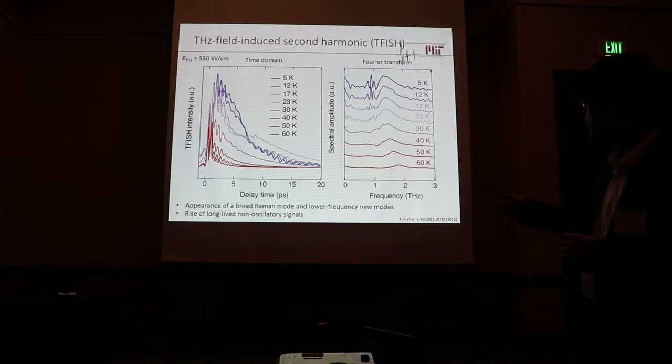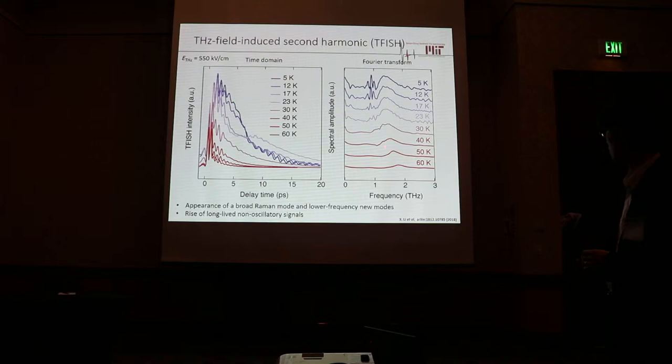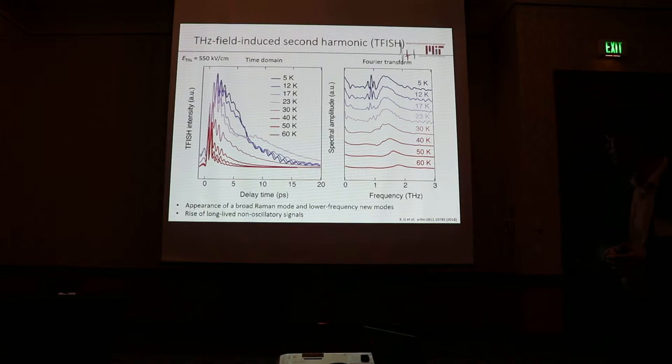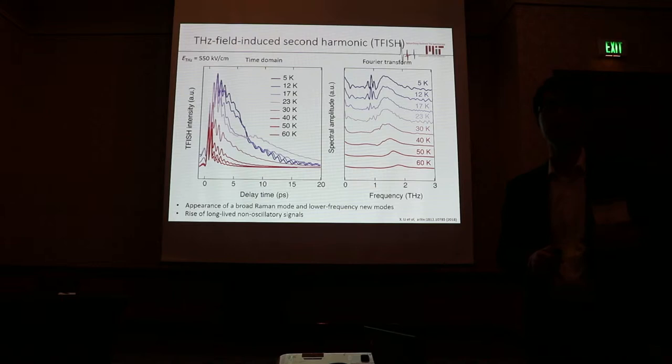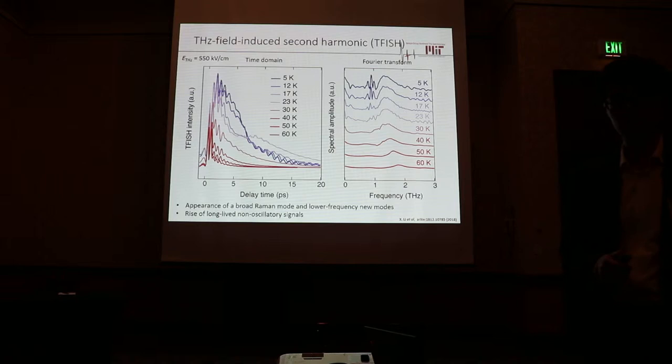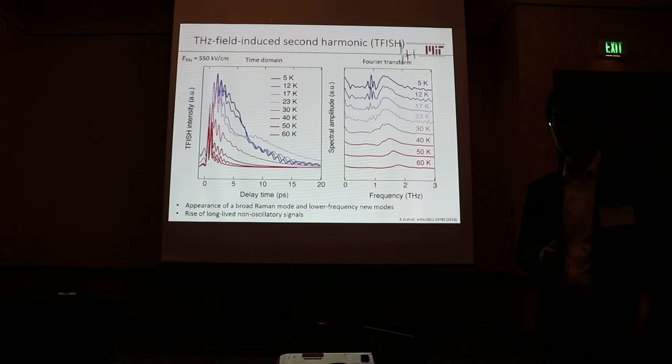As we lower the temperature, we first see the soft mode moving to lower frequency. At even lower temperatures, we start to see three new spectral modes that appear at lower frequencies. Since TIFISH is a symmetry-selective measurement sensitive only to IR-active responses, the appearance of these modes provides the first indication that inversion symmetry breaking has occurred, thus allowing otherwise symmetry-forbidden modes to be observed.